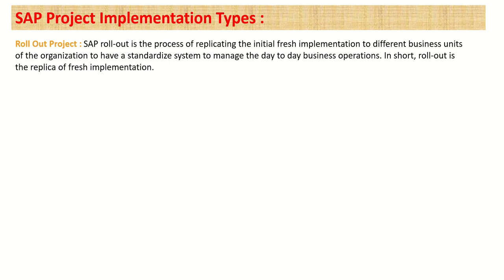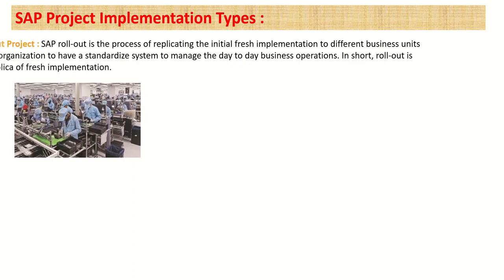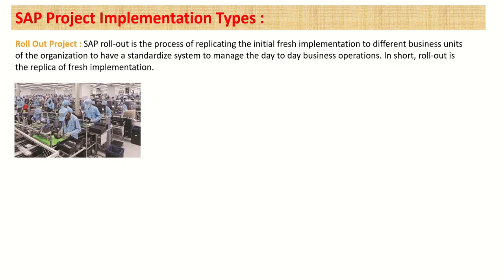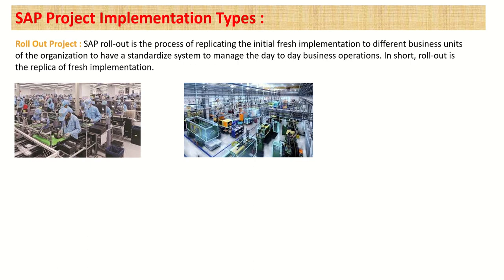The next type is the rollout project. Here, the company is already using SAP for one plant — they completed a fresh implementation and everything is working fine. Later, when they open a new plant or have an existing plant not yet on SAP, they replicate all the configuration from the first plant to the new one. These types of projects — replicating an existing implementation to a new company or plant — are called rollout projects.